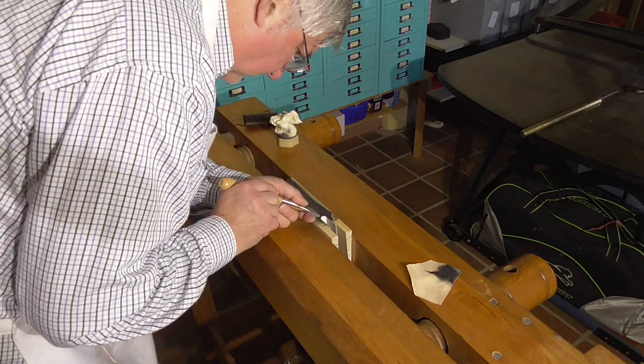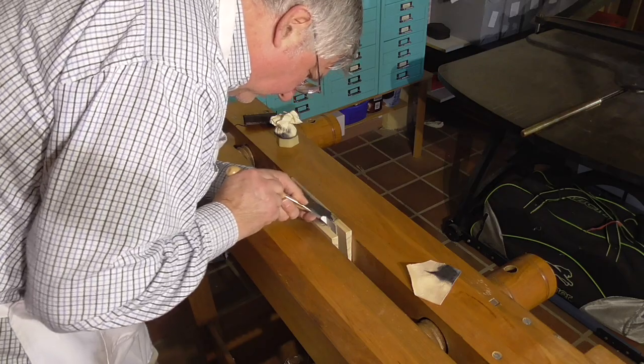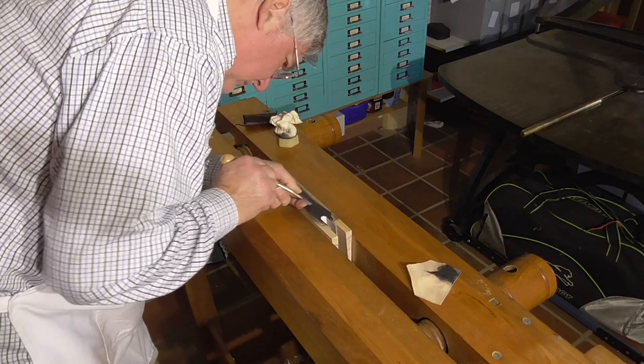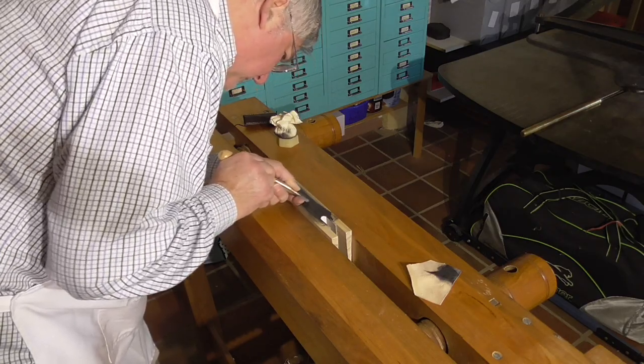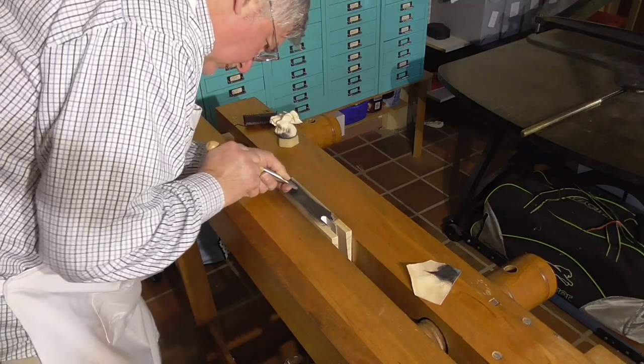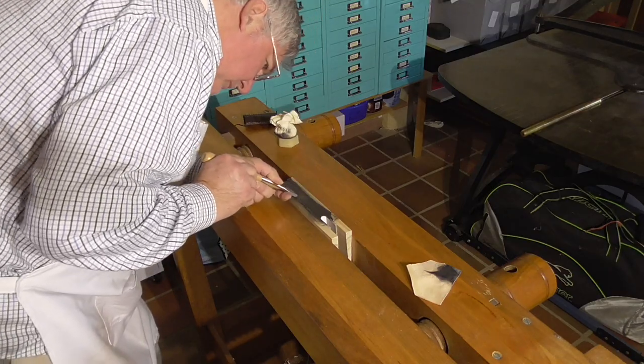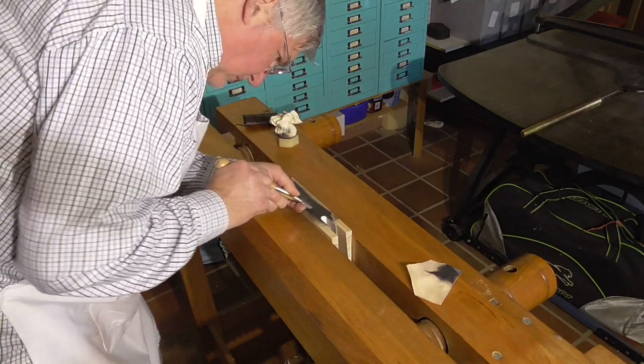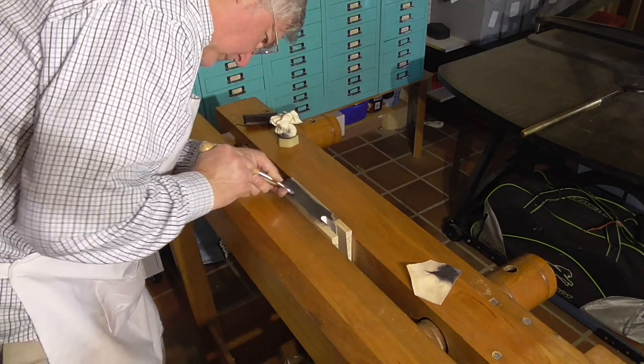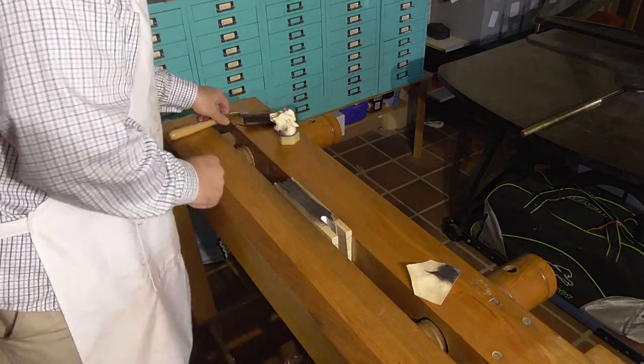Now it's time to use the agate burnisher to burnish the edge. I like to think of this first go as setting the graphite, so it's just a light burnish. Go over the edge two or three times and then start adding beeswax and start burnishing it slightly harder each time. I feel that burnishing with the beeswax is a really important step. It seals in the graphite and it stops the edge from shedding graphite in the future.